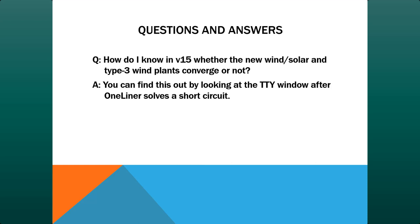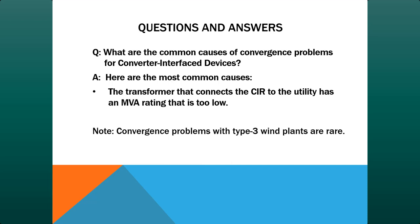Another question from users evaluating version 15 beta: how do I know whether these devices have converged? You can find this out by looking at the TTY window after you simulate a fault — it will give you a list of devices that did not converge. Also note: convergence problems with type 3 wind plants are very rare; I haven't heard one person complain about it yet.